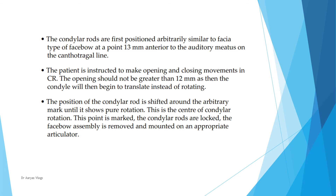The condylar rod surface is positioned arbitrarily at a point 13 mm anterior to the auditory meatus on the canthus-tragus line. The patient is instructed to make opening and closing movements in the centric relation position. The opening should not be greater than 12 mm, as then the condyle will begin to translate instead of rotating. The position of the condylar rod is shifted around the arbitrary mark until it shows pure rotation — this is the center of condylar rotation. This point is marked, the condylar rods are locked, and the facebow assembly is removed and mounted on an appropriate articulator.